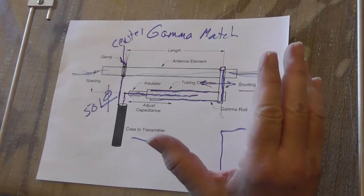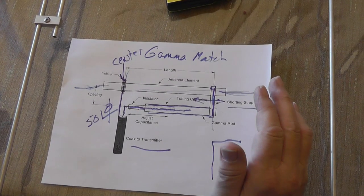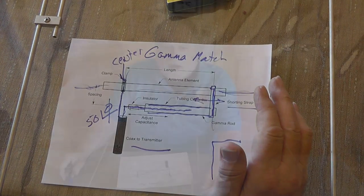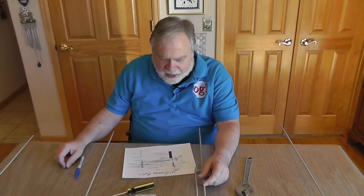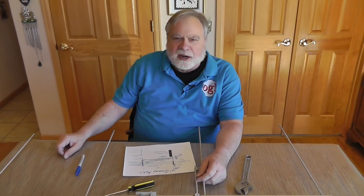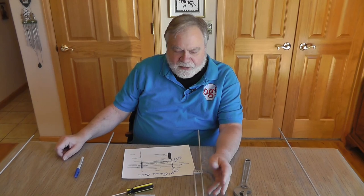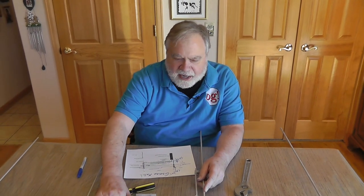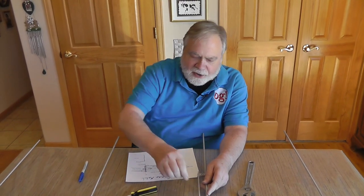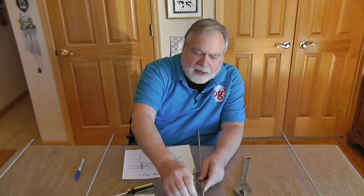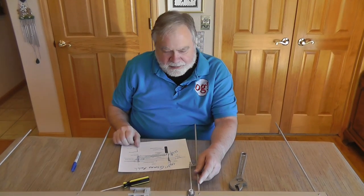So this is how a gamma match works. It's really quite ingenious. It's one of many different ways to match. So there you have it. The gamma match is made so that you can feed a balanced item like a Yagi with unbalanced coax.